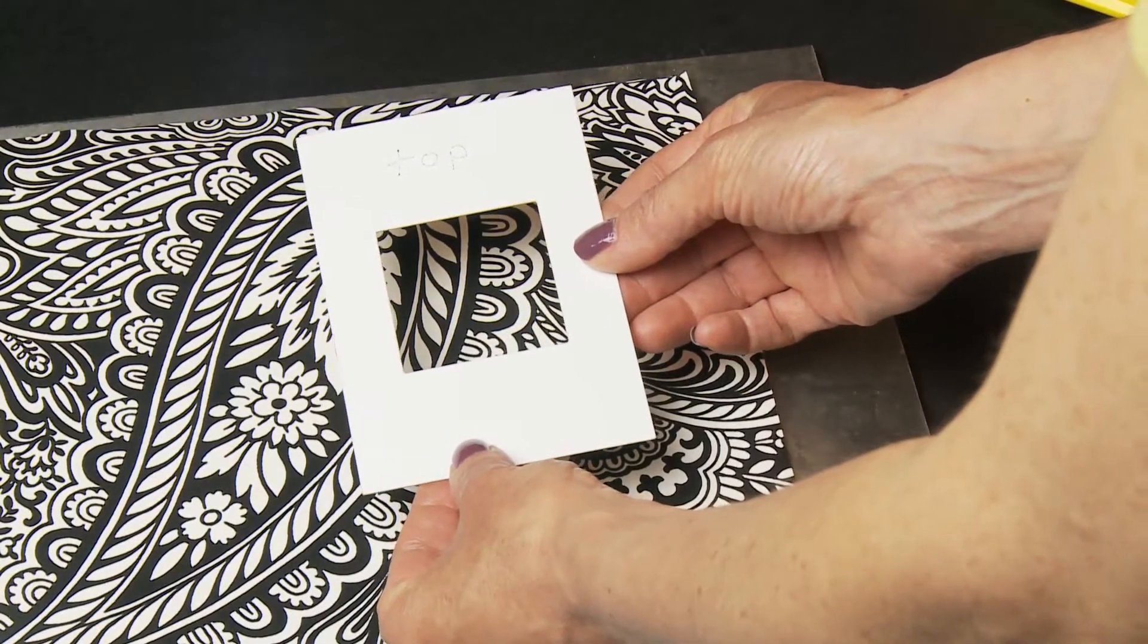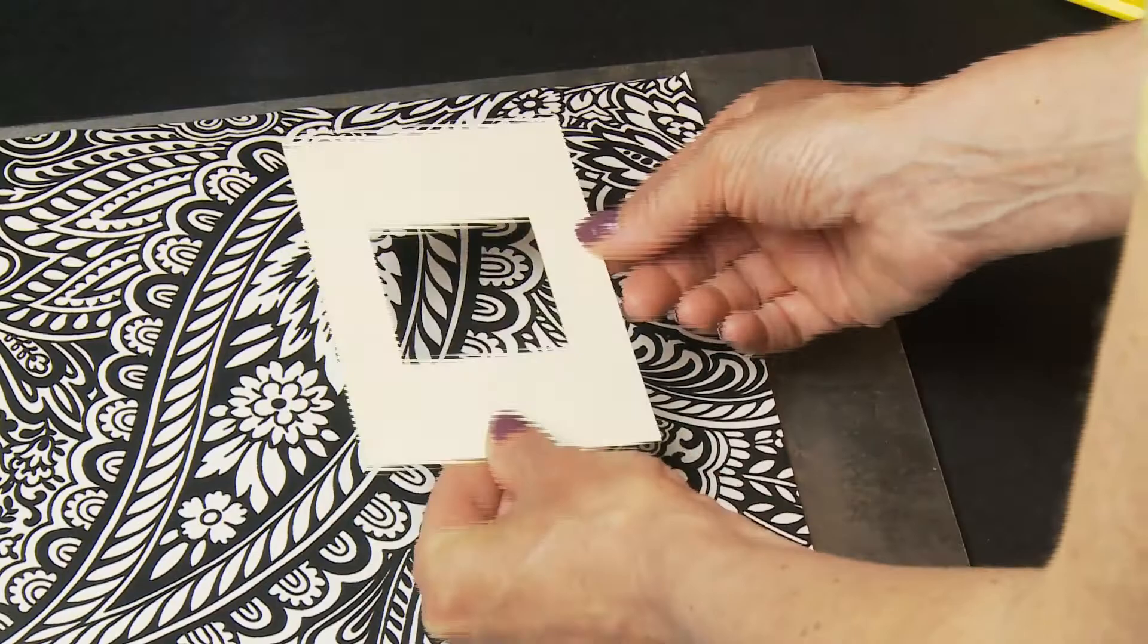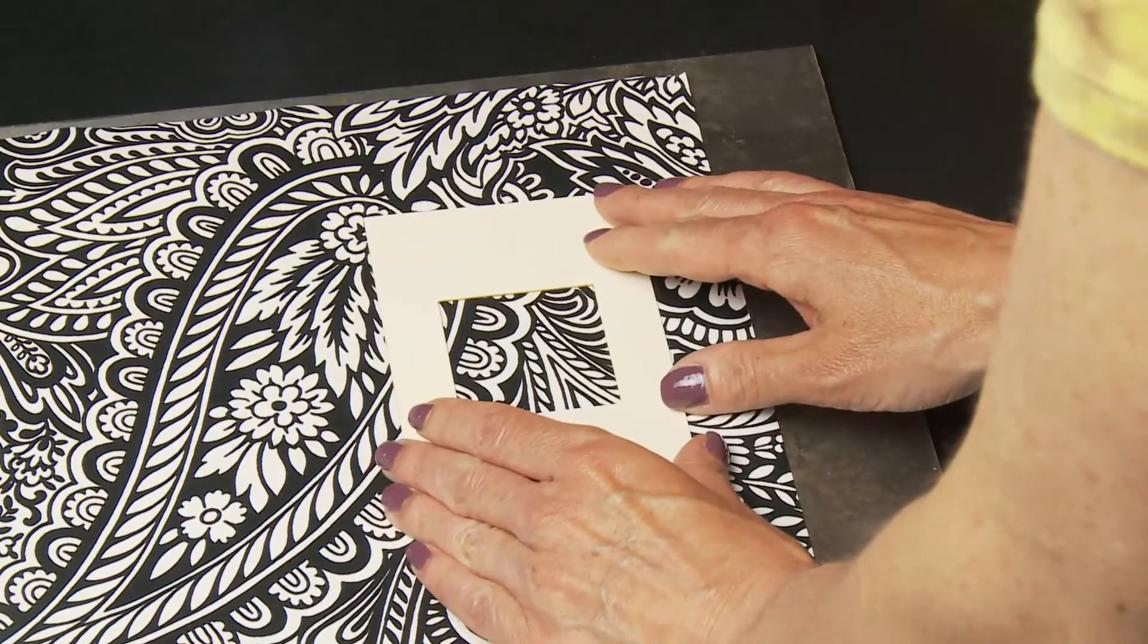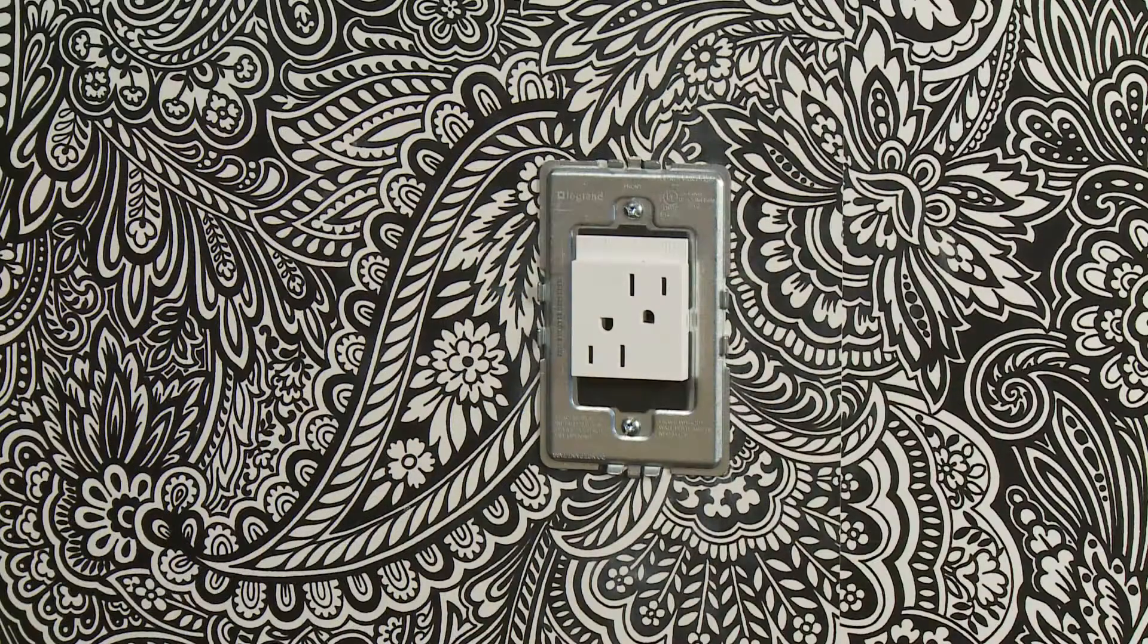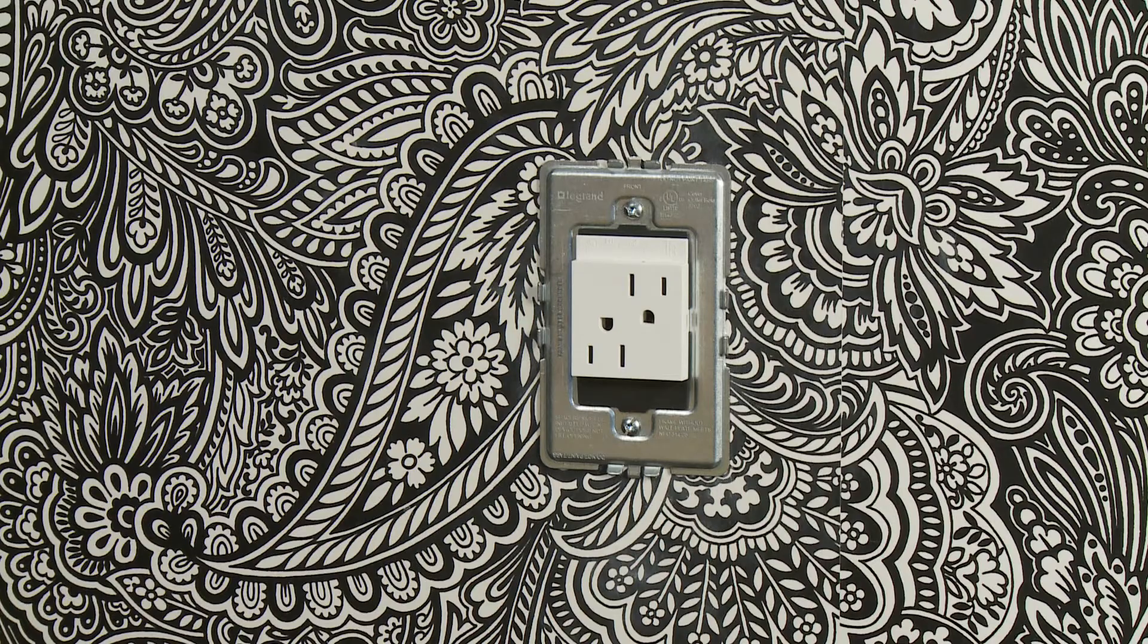take the Adorn template and set it down flat on your wallpaper. Pay attention to the pattern on your wall. As best you can, match up the wallpaper section you are using with the pattern on the wall.